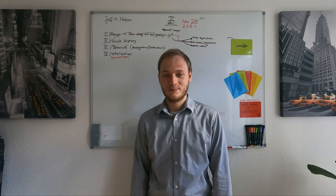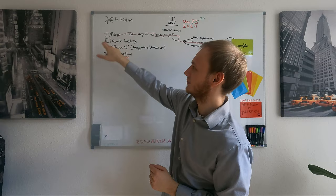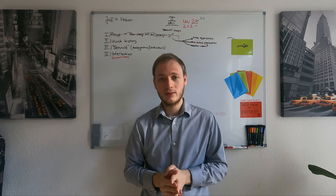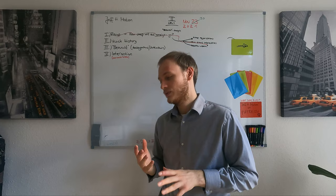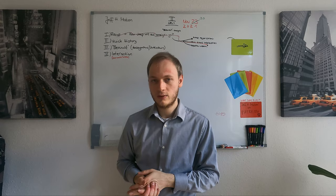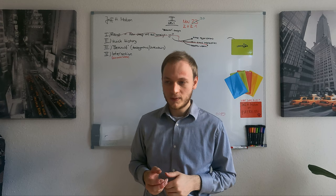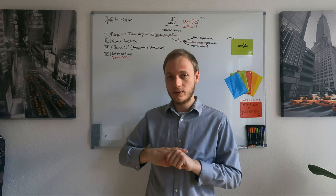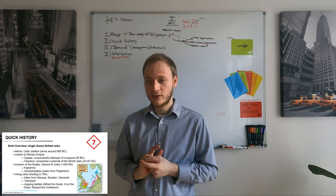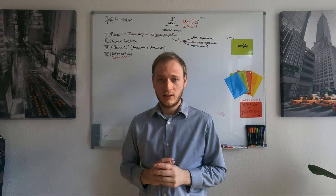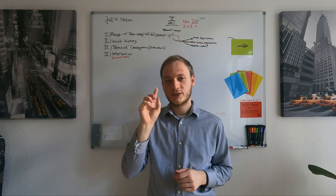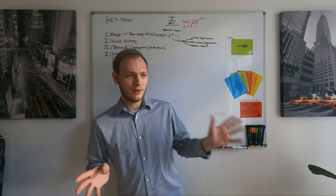Now let's start with our actual topic today. We will start with some quick history. I want to give you some historical background for the time of the 5th century to 1066, so the period of Old English literature. That is not directly connected to Beowulf or to any of the literature, but it is important for your understanding. And here you have a good overview on slide number seven - if you open the script or go to page number seven, it basically gives you everything I'm going to say now, and there is also an image that illustrates it.